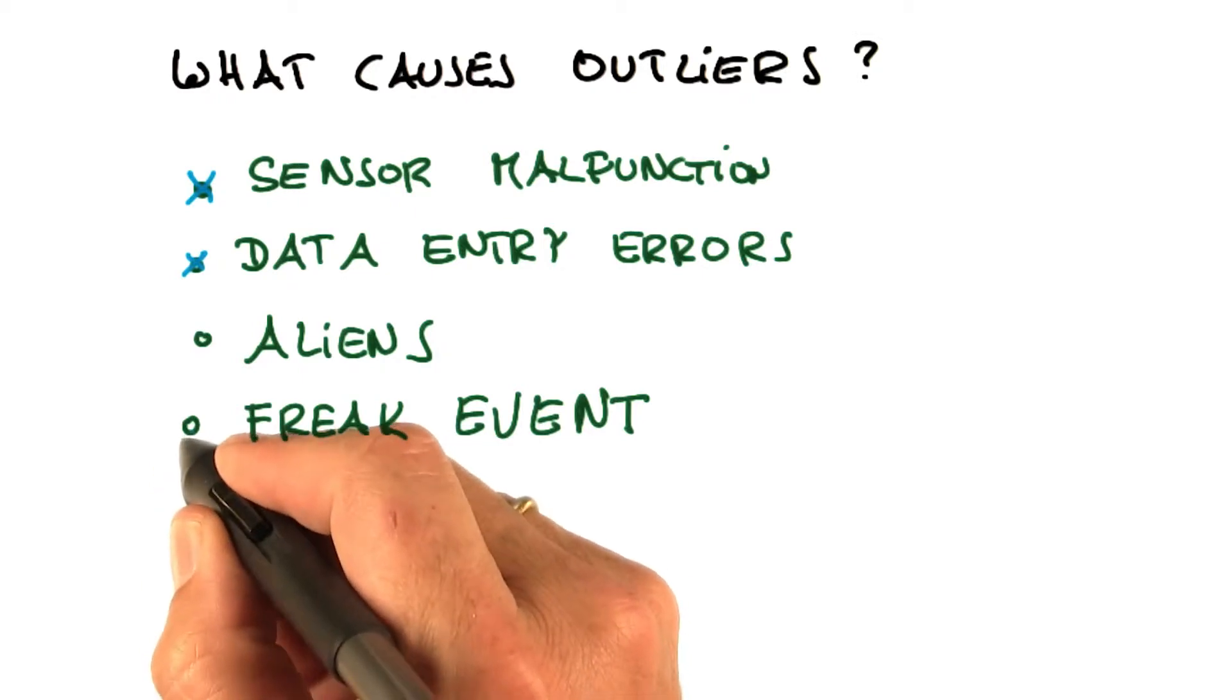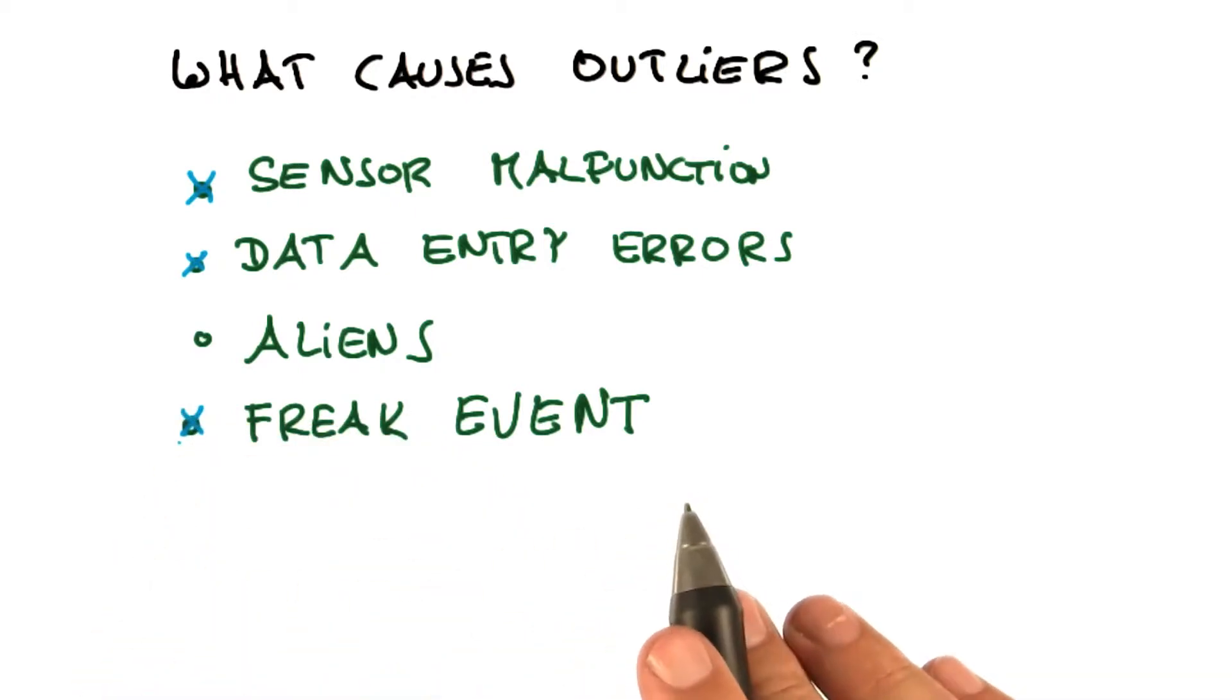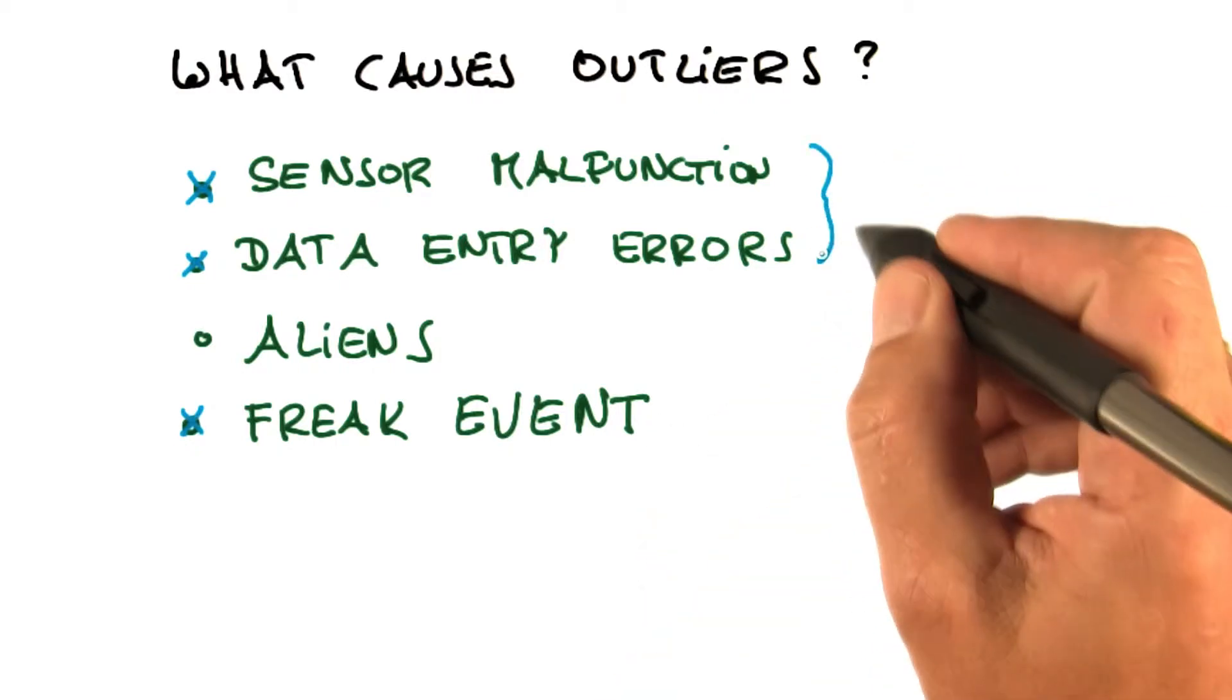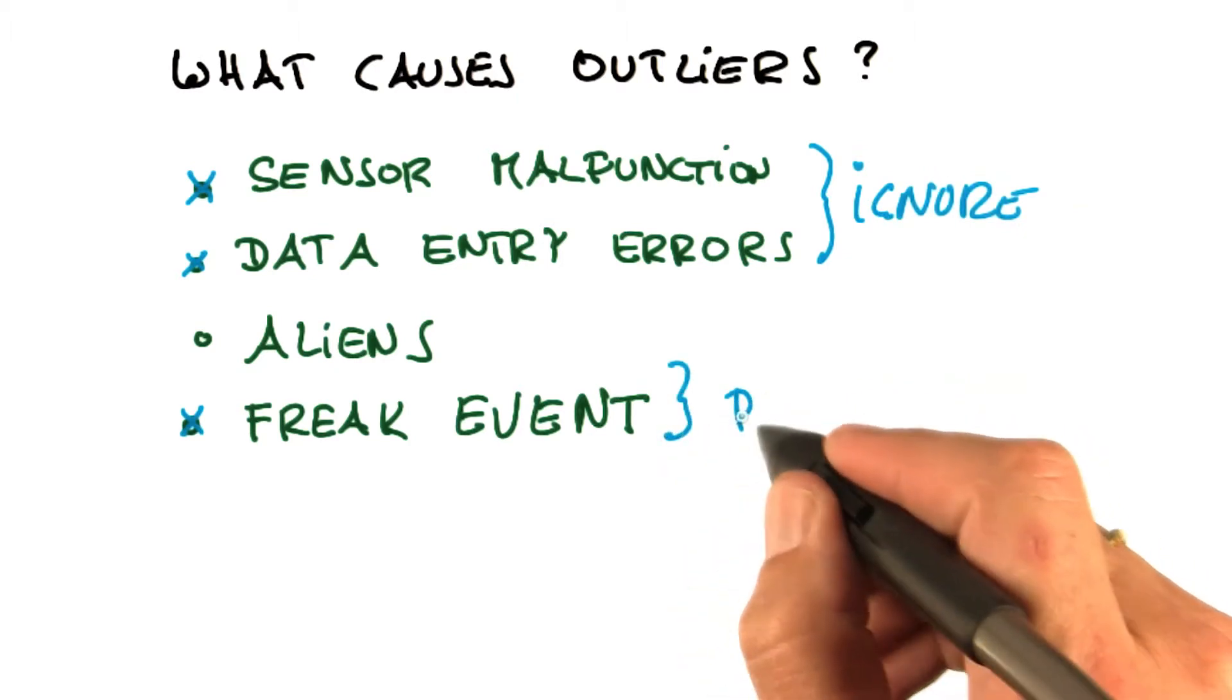But freak events. Sometimes you get a situation that is just very unlikely, but that combination causes an extreme data point. And these are outliers you want to pay attention to. Those over here, you'd like to ignore. And those over here, you'd like to pay attention to.